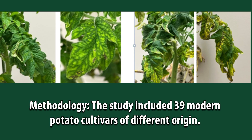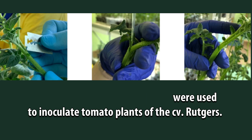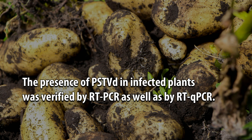Methodology: the study included 39 modern potato cultivars of different origin. Transcripts of four PSTVd strains were used to inoculate tomato plants of the CV. RUTGERS. Before PSTVd inoculation with tomato sap, all potato plants were tested for viral infection by ELISA. The presence of PSTVd in infected plants was verified by RT-PCR as well as by RT-Q-PCR.